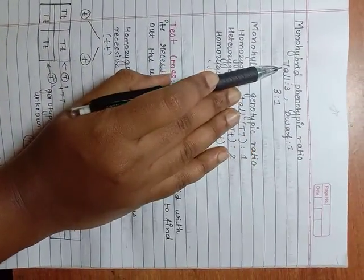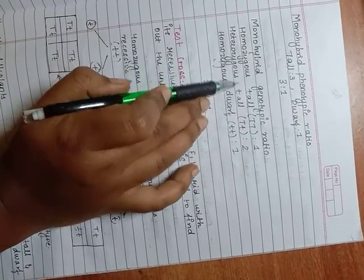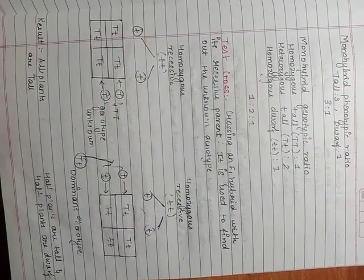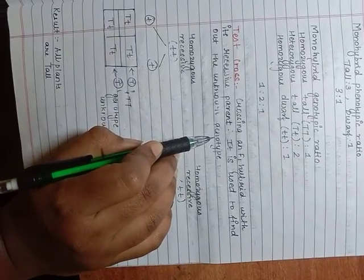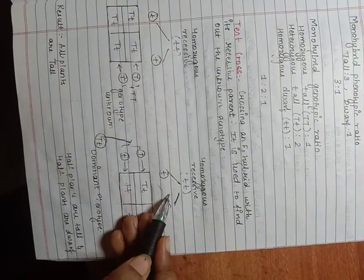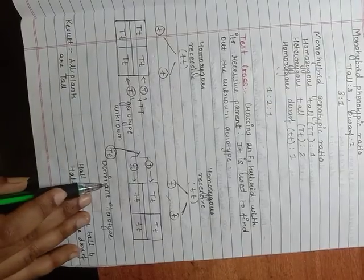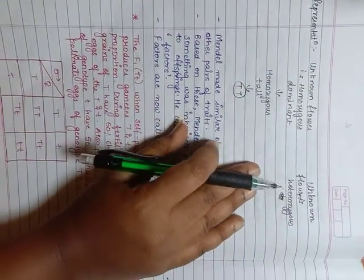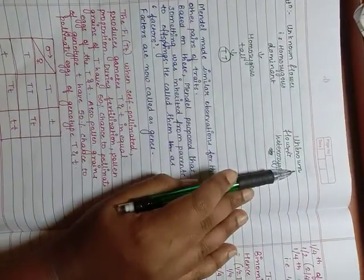Let us look into their ratios. Monohybrid phenotypic ratio: tall that is 3, dwarf 1, that is 3 is to 1. Monohybrid genotypic ratio: homozygous tall that is 1, heterozygous tall that is 2, homozygous dwarf that is 1, 1 is to 2 is to 1. Now let us come to the test cross. Crossing an F1 hybrid with its recessive parent. It is used to find out the unknown genotype. If all plants are tall, the unknown genotype is homozygous dominant. If half plants are tall while half plants are dwarf, the unknown flower is heterozygous.